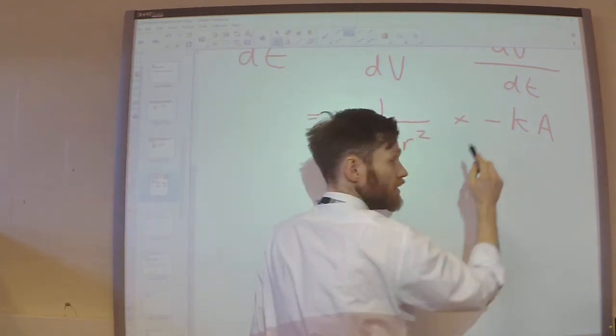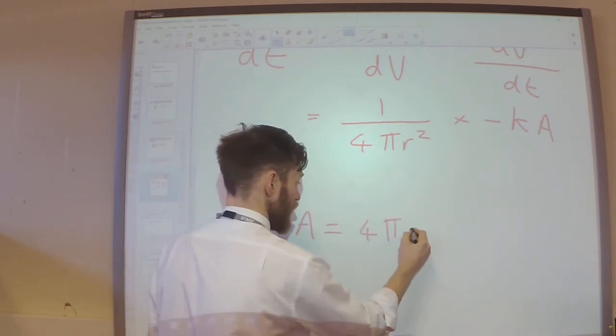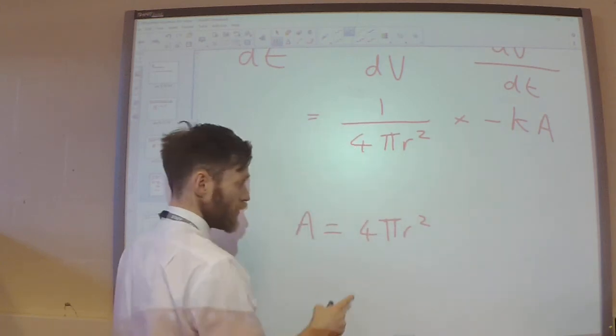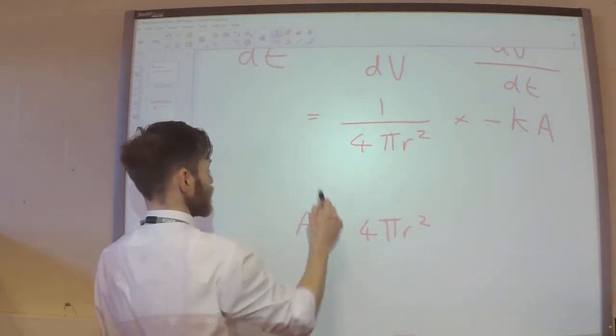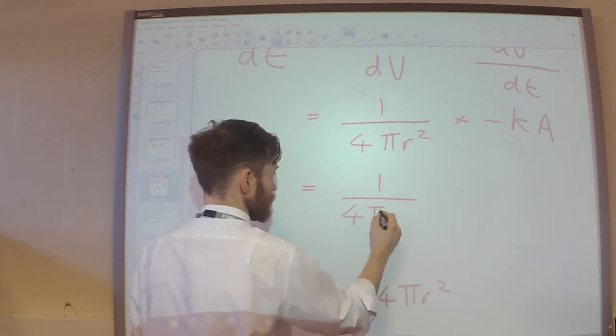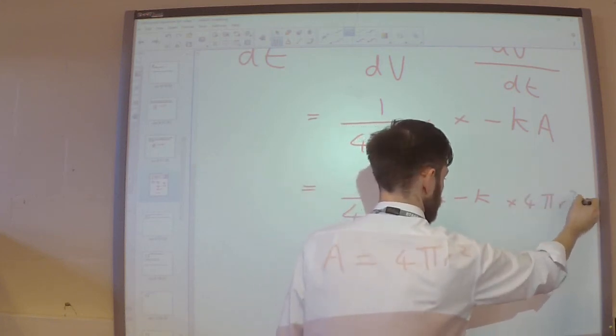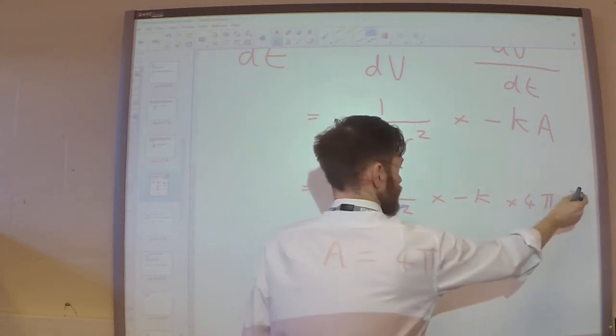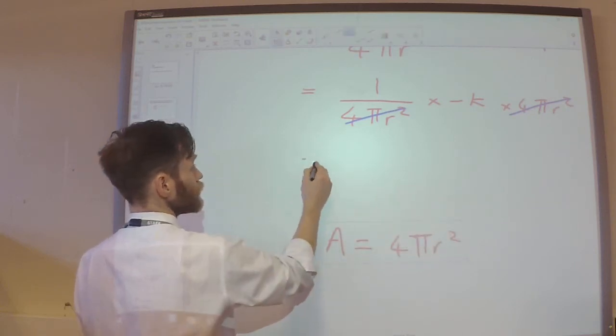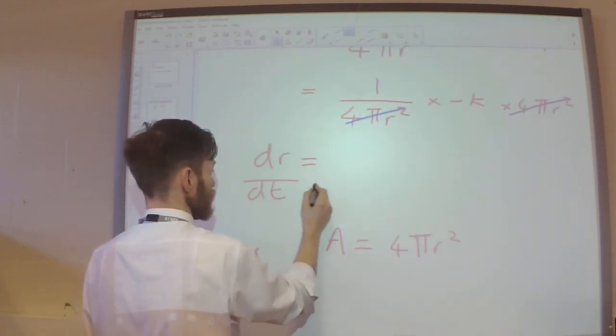Now, if it is a sphere, then I know that the surface area of a sphere is four-pi-r squared. So, I can replace the area here with four-pi-r squared, which is useful, because what you will notice now, then, is we're going to get some cancellation. Four-pi-r squared will cancel out, and I will just get left with dr by dt is equal to minus k.